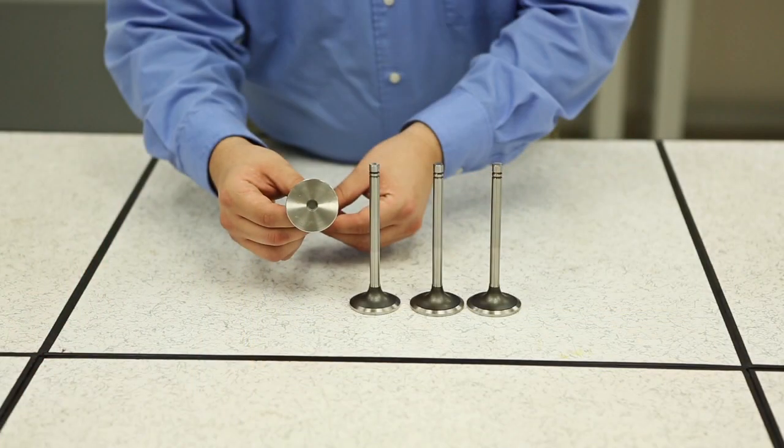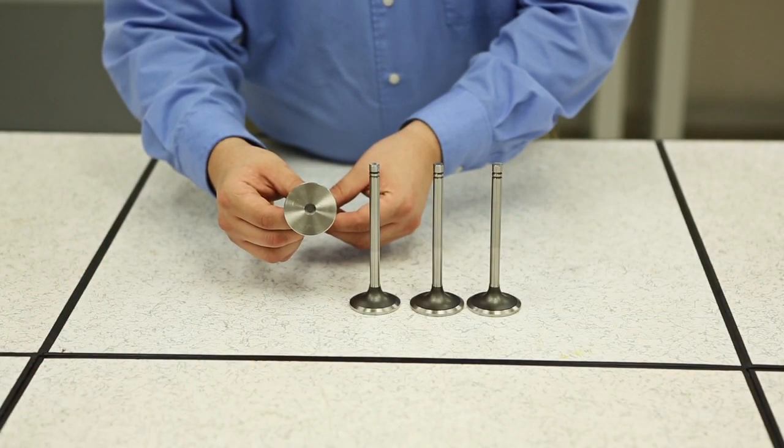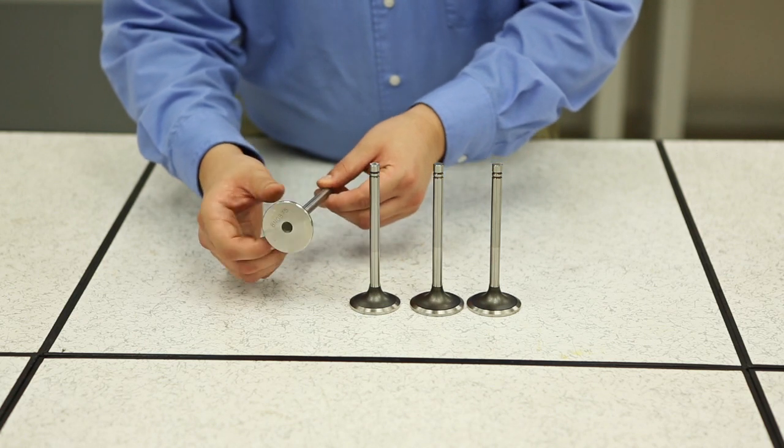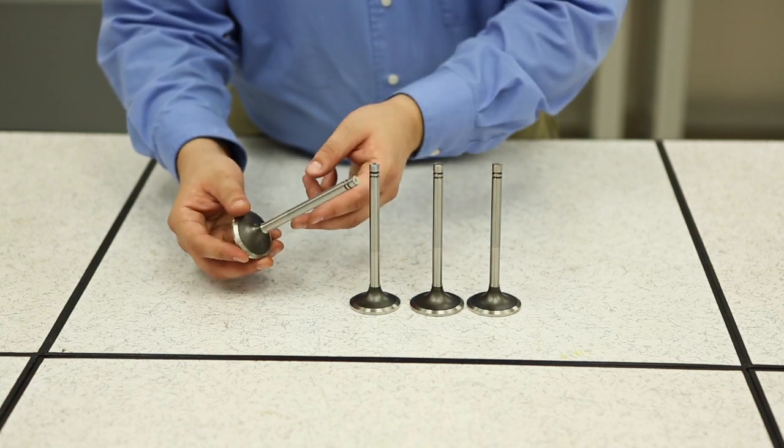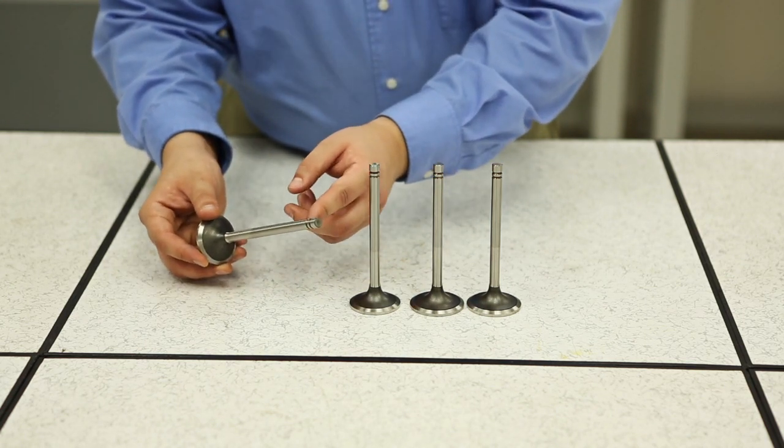CTP trimetallic valves are welded at the seat with stellite to improve its endurance. This gives a higher hardness and resistance to chemical corrosion.